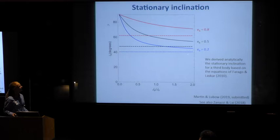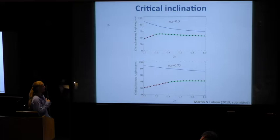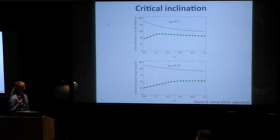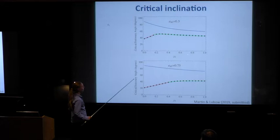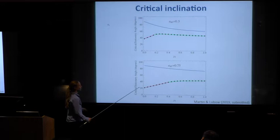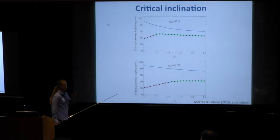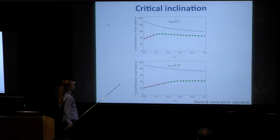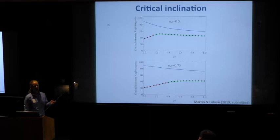We can also calculate the critical inclination — the inclination above which we're in the librating state, precessing about the eccentricity vector, and below which we're in the circulating state, precessing about the angular momentum vector. The upper line shows the stationary angle, and the lower line shows the critical inclination between the two different states, as a function of the ratio of the angular momentum of the third body to the binary. Below this critical inclination, the disk aligns to the binary; above it, it aligns to the eccentricity vector.